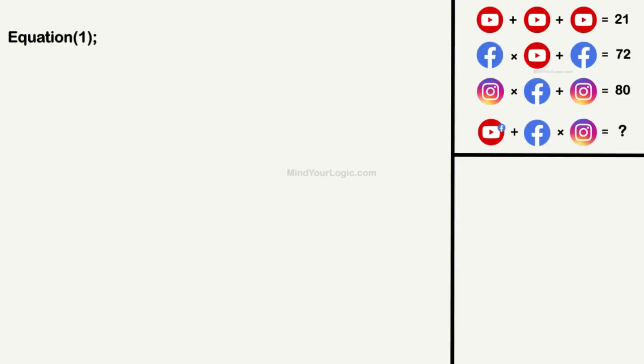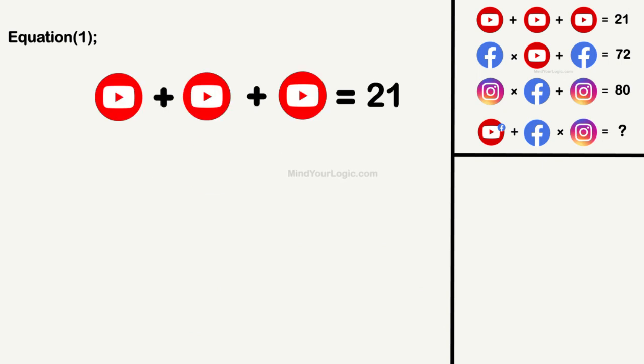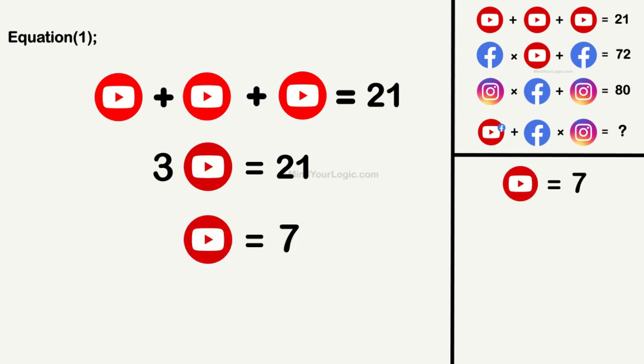Initiating with equation 1. YouTube plus YouTube plus YouTube equals 21. On simplifying, we get YouTube equals 7.